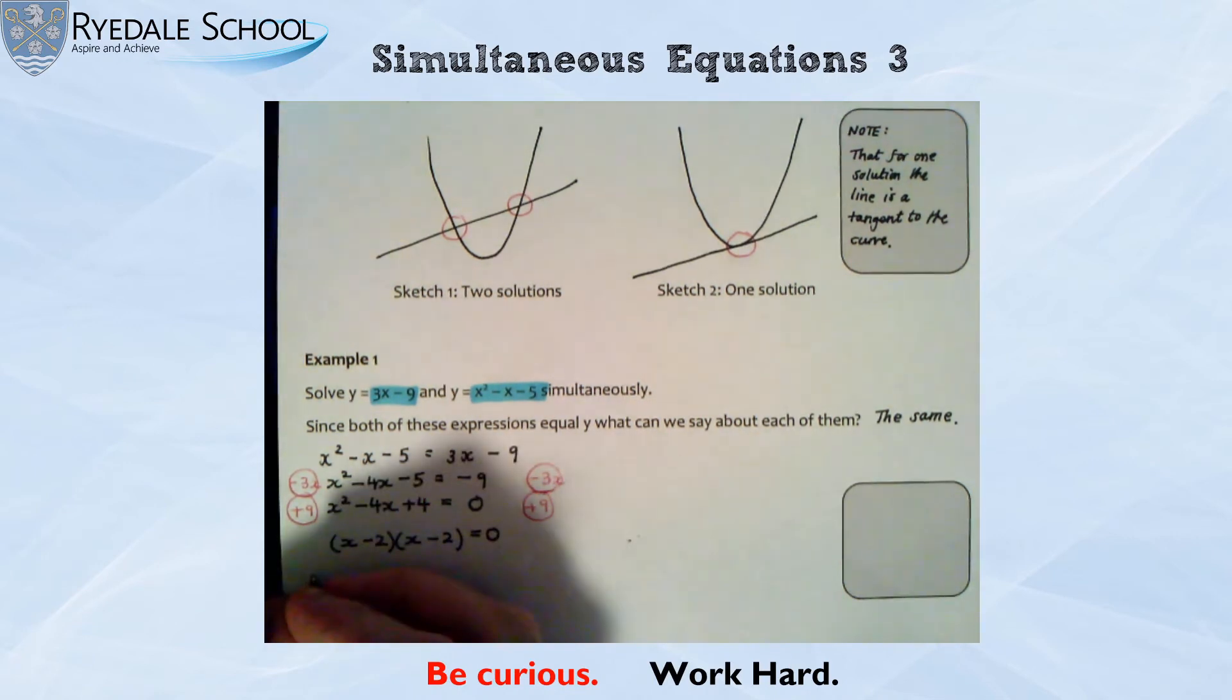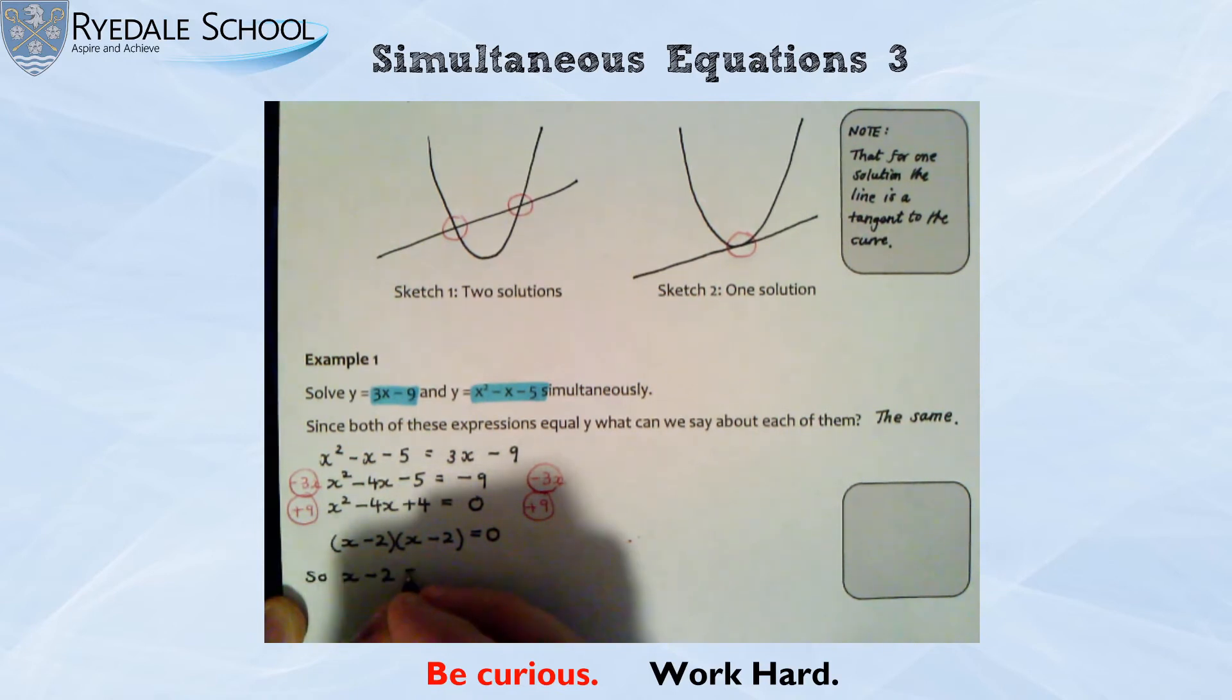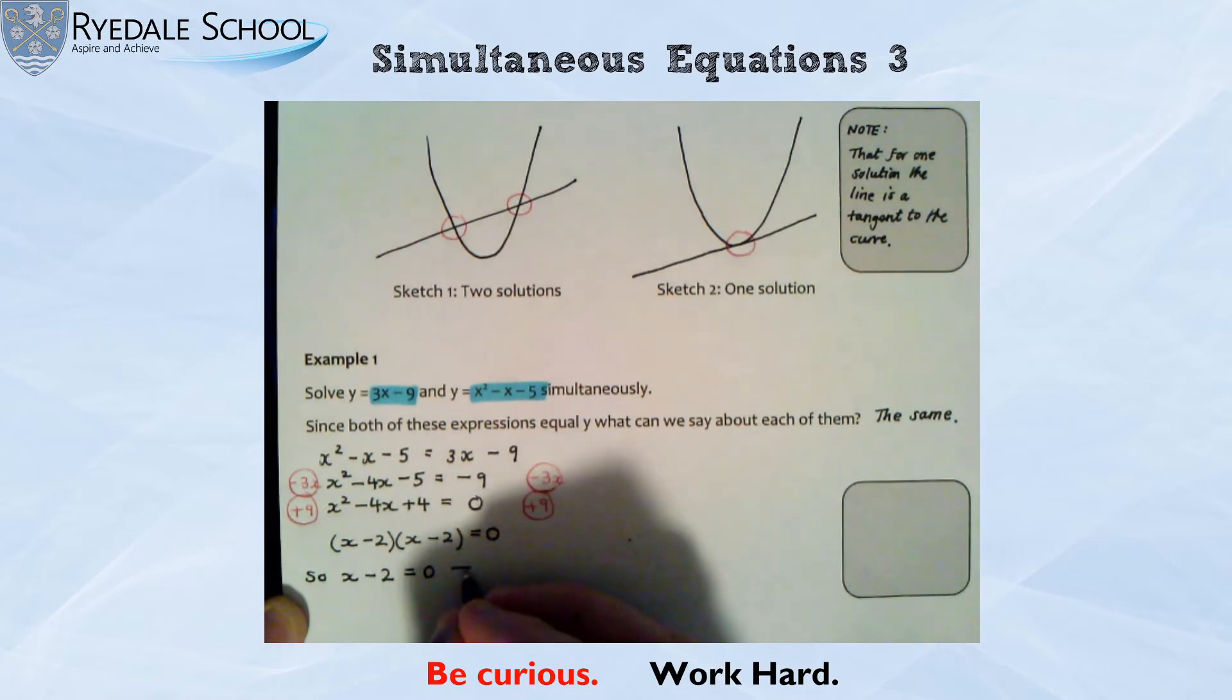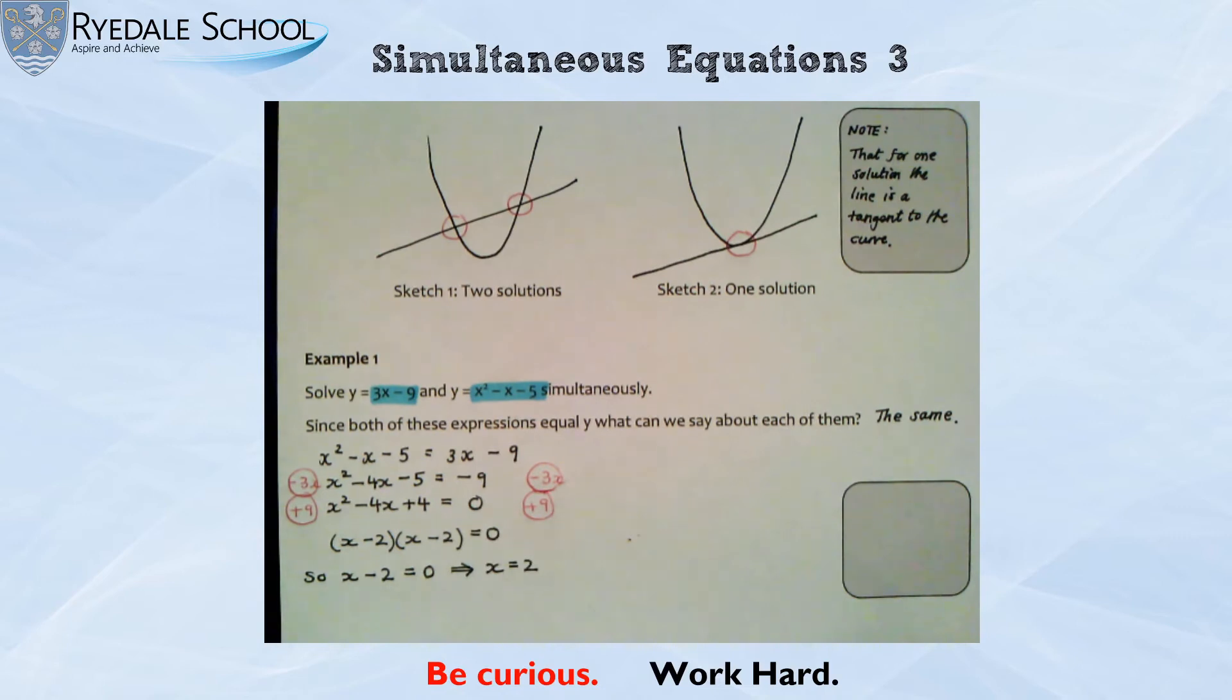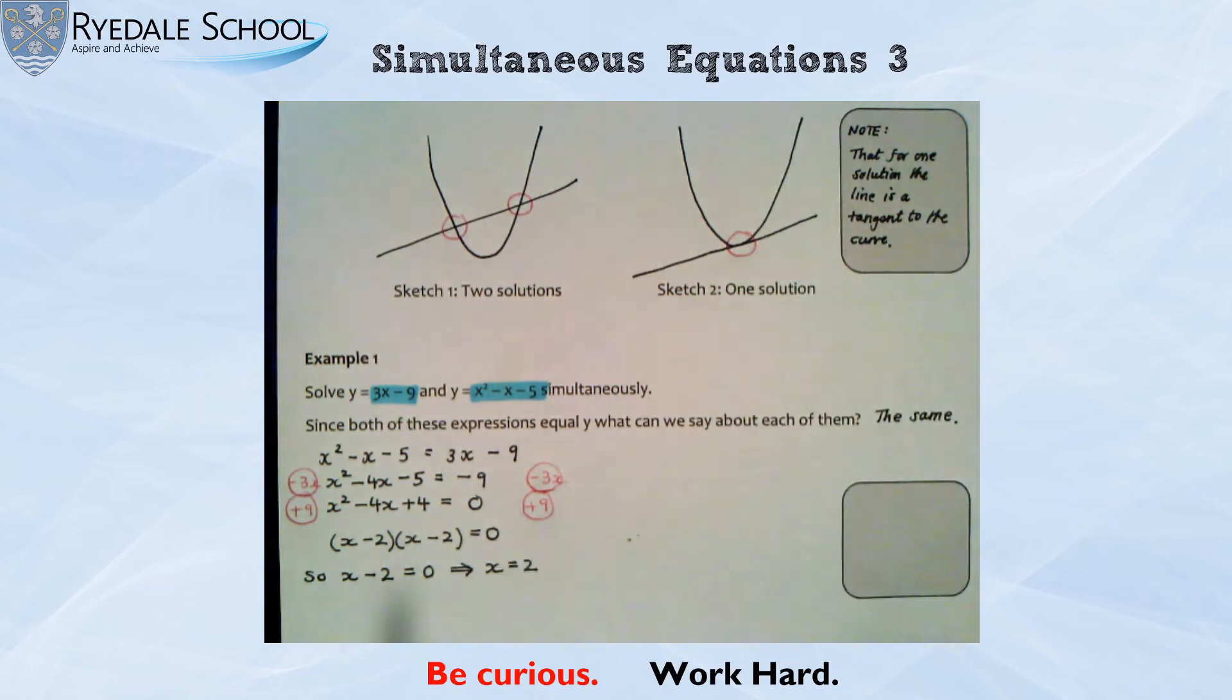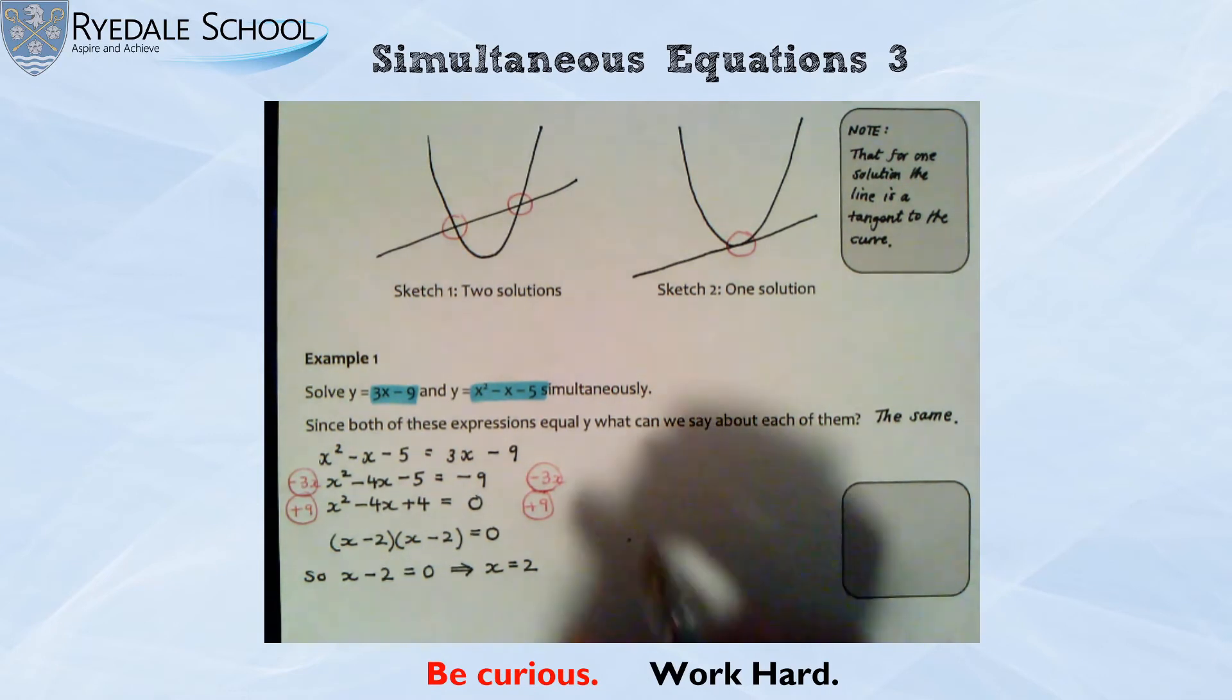So one of these brackets has to equal zero. Both of these brackets are actually the same. So we know, so x take away 2 must equal 0. Therefore, x has to equal 2. So this is going to be one of these examples where we just end up with one solution. This is going to end up being a tangent to that curve.